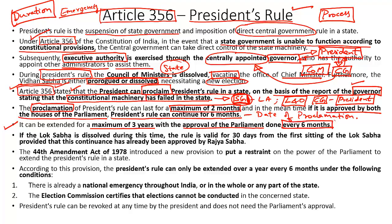Every six months, both houses of Parliament should approve the extension of President's rule, and the maximum extension can be for a period of three years from the date of proclamation. If the Lok Sabha gets dissolved during this period, President's rule will remain valid for 30 days from the first sitting of the newly elected Lok Sabha, provided President's rule has been kept in continuance by the approval of the Rajya Sabha.